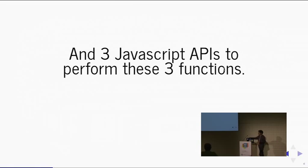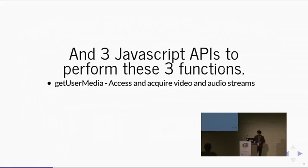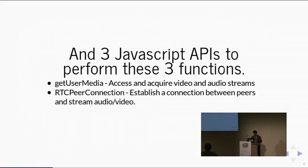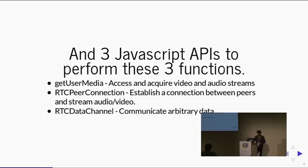For these three functions, WebRTC provides three JavaScript APIs. First one is getUserMedia — it lets you pull out all those video and audio streams. Second is RTCPeerConnection — this is where the magic really happens; you communicate with your peers. Third is RTCDataChannel — it lets you communicate arbitrary data that is not audio or video only.